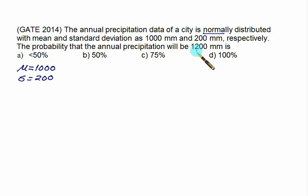The desired value is 1200 so we have Z equals to X minus mu divided by sigma. This is 1200 minus 1000 is 200 by 200 is 1.